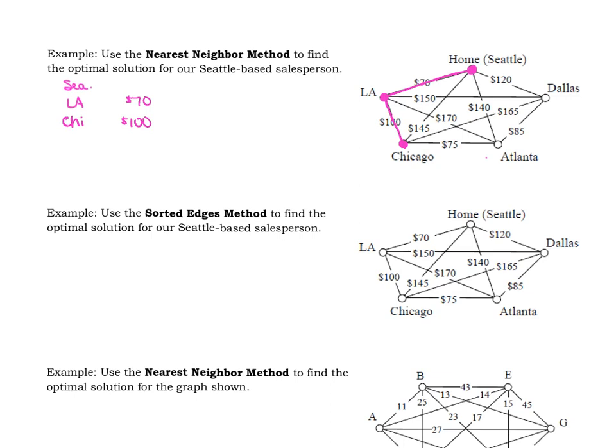And then it says, continue until the circuit is complete, ensuring that you never visit any vertex, city in this case, more than once, with the exception of the starting vertex. So we just repeat this process.